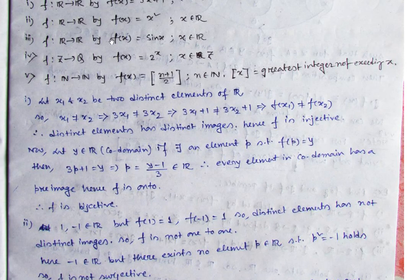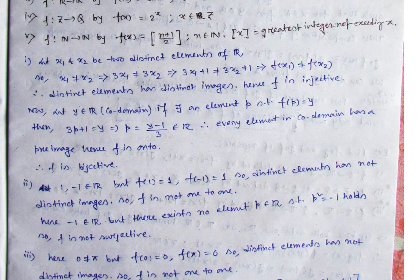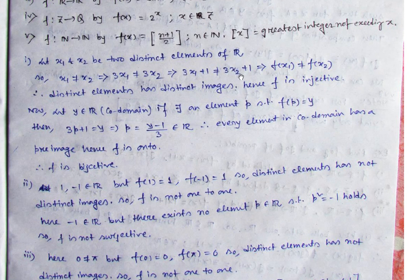For surjectivity of f(x) = x²: choose any negative number from the co-domain ℝ, say −1. We need a real number p such that p² = −1. But that is the imaginary number i — no real number p exists whose square gives −1. So p² = −1 cannot hold for any real p ∈ ℝ. Therefore this mapping is neither injective nor surjective. If we are proving, we apply the definition; if disproving, we cite a counterexample.